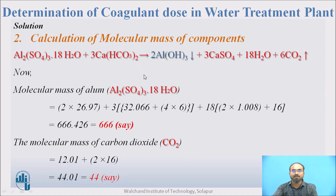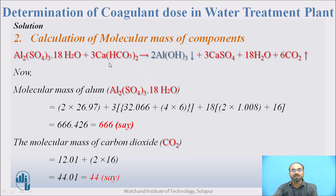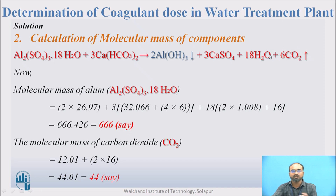To calculate other component masses such as carbon dioxide or permanent hardness (CaSO₄), we use the chemical equation for alum dose: Al₂(SO₄)₃·18H₂O + 3Ca(HCO₃)₂ → Al(OH)₃ + CaSO₄ + H₂O + CO₂. Balancing gives coefficients 3, 2, 3, 18, and 6, making the equation balanced.